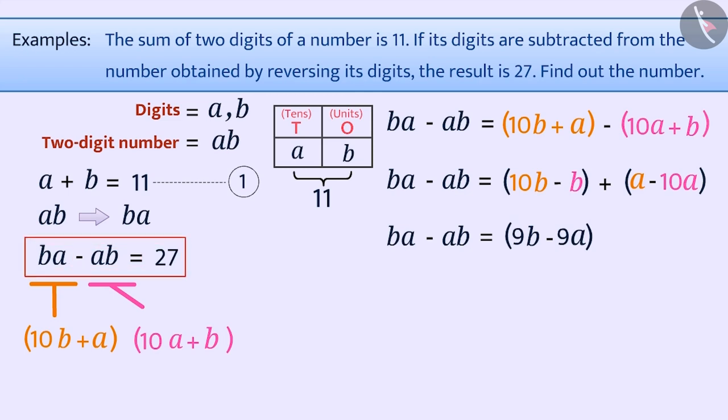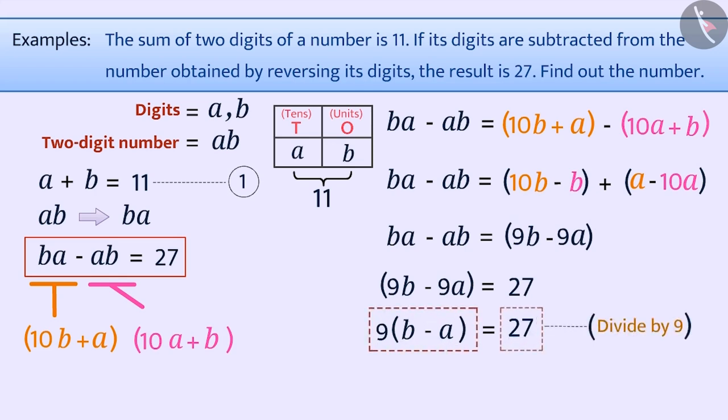Since BA minus AB is equal to 27, we can say that 9B minus 9A is equal to 27. Here, we can take 9 outside the brackets. By dividing both sides by 9, we get B minus A is equal to 3. We will consider it as equation 2.